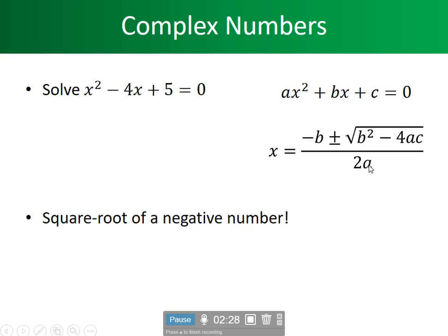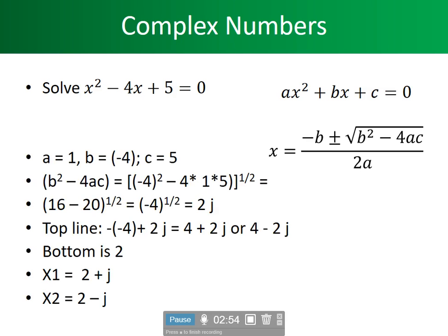When we take this specific problem and put it into the quadratic formula — which is for quadratic equations — we will find that we will have a problem. We're plugging in 1 for a, minus 4 for b, and 5 for c. Let's break this down and look at what's inside the square root sign.